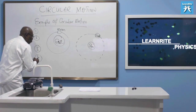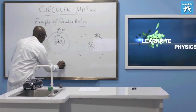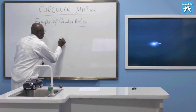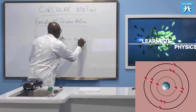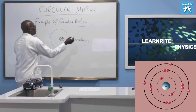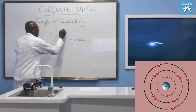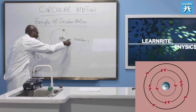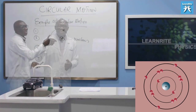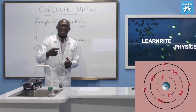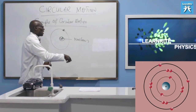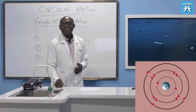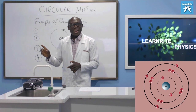The fourth example has to do with the structure of an atom. The atom has a nucleus, and surrounding the nucleus we have electrons. This electron moves around the nucleus, describing a circle where the center of that circle lies outside where the electron is. So the electron is performing circular motion.